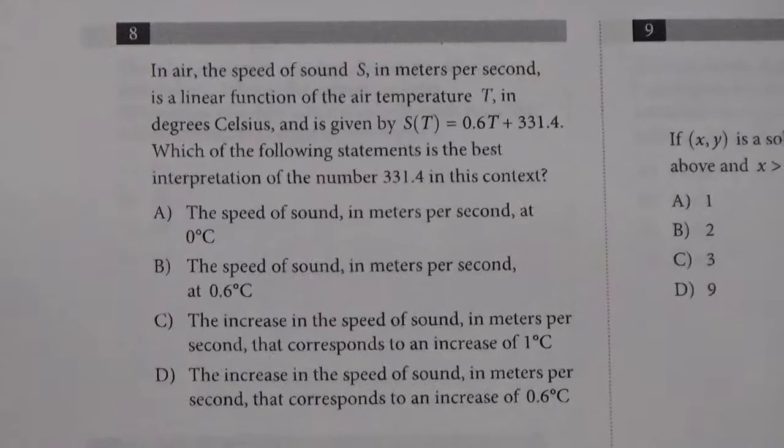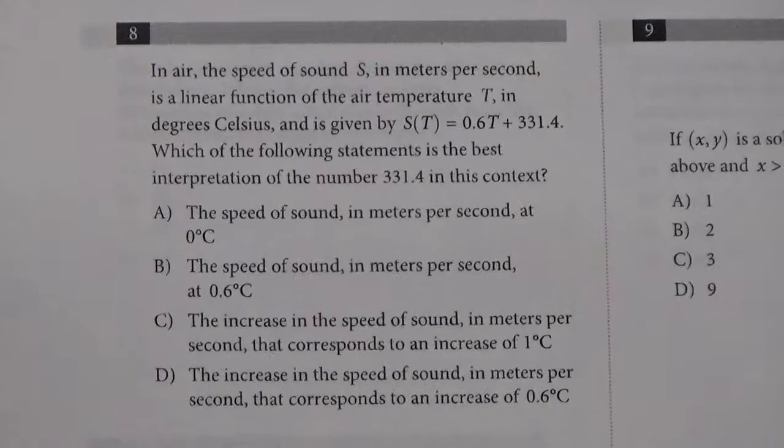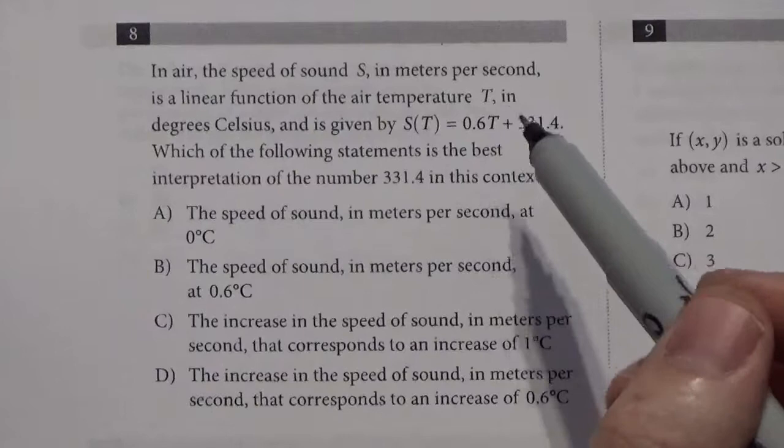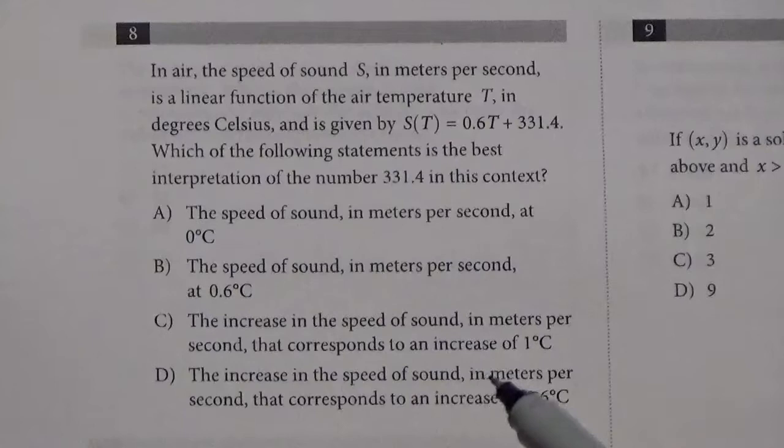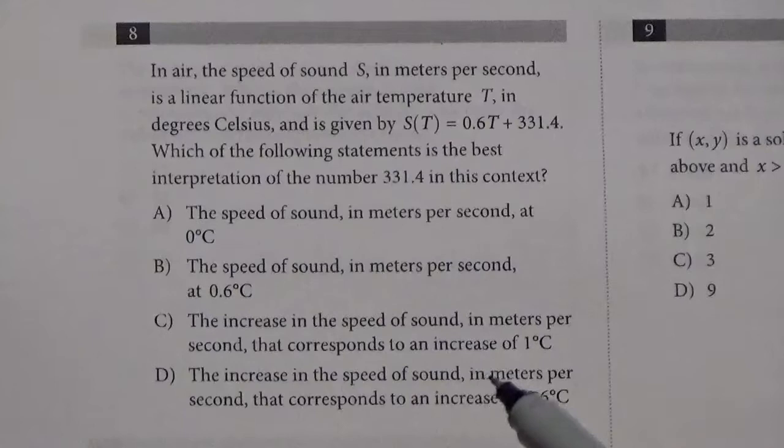As I mentioned, we're going to start at number 8 because we're going to avoid the lower difficulty questions. 8 says, in the air, the speed of sound s in meters per second is a linear function of the air temperature t in degrees Celsius. It is given by s of t equals 0.6t plus 331.4. Which is the best interpretation of the number 331.4. Now this question comes up a ton on the SAT. That is, do you know how linear functions work?